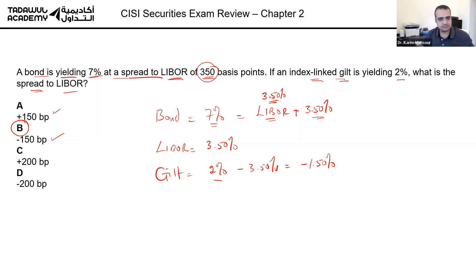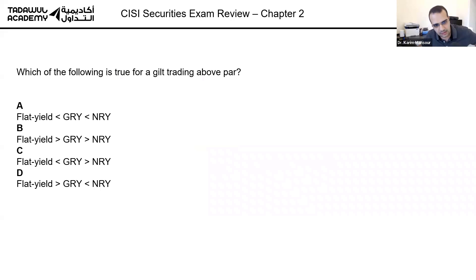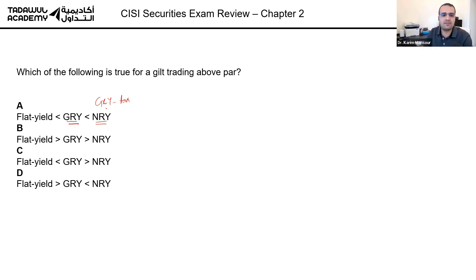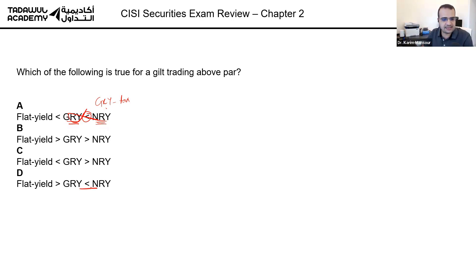Most of you got it right. Next: which of the following is true for a gilt trading above par? We can quickly cancel some wrong answers: the gross redemption yield and the net redemption yield are very similar — the only difference is the net redemption yield is the gross redemption yield minus tax. So the net redemption yield is always less than the gross. Any answer saying net is higher than gross is wrong.